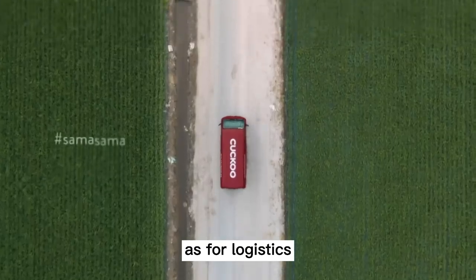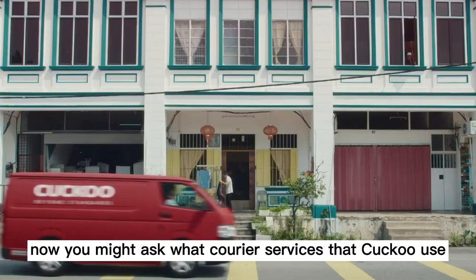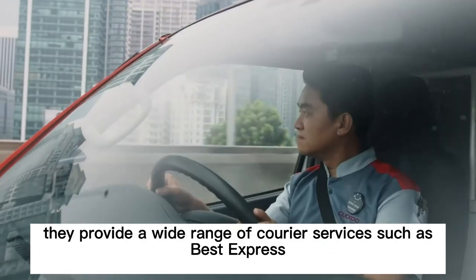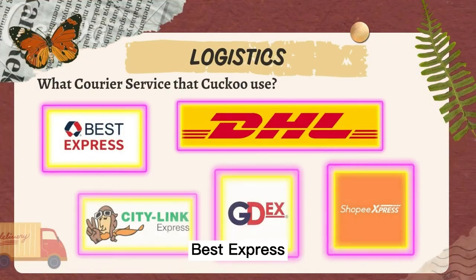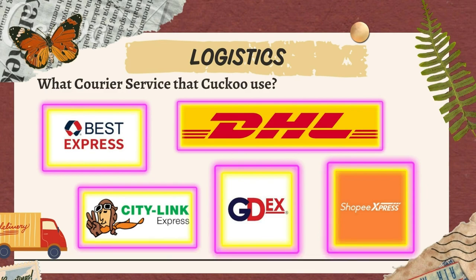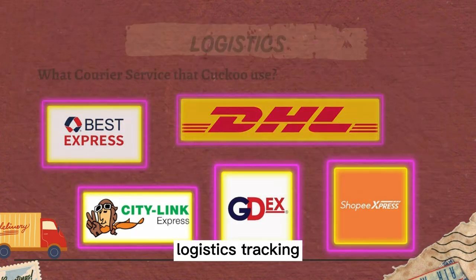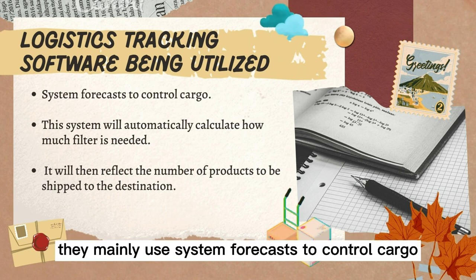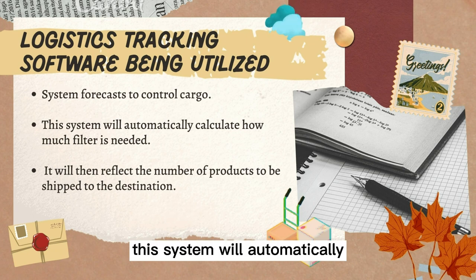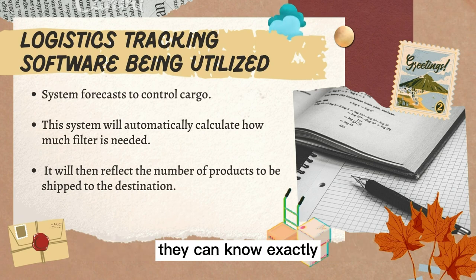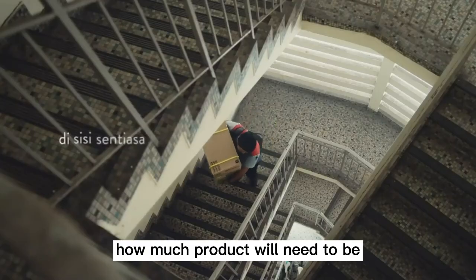As for logistics, Kuku provides a wide range of courier services such as Best Express, DHL, City Link Express, GDEx, and Shopee Express. Other than that, logistics tracking software is also utilized by Kuku. They mainly use a system forecast to control cargo — this system automatically calculates how much filter is needed, and when the required quantity is received, they can know exactly how much product needs to be shipped to the destination.